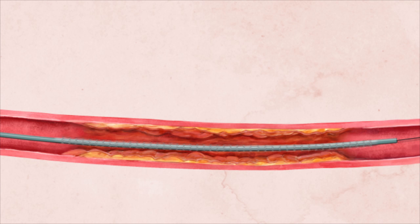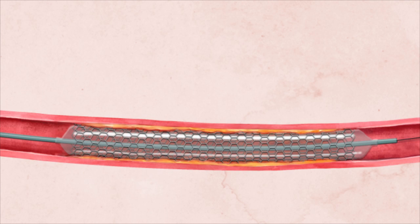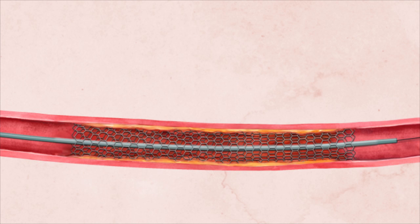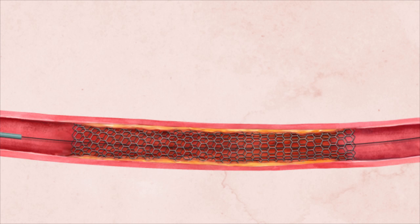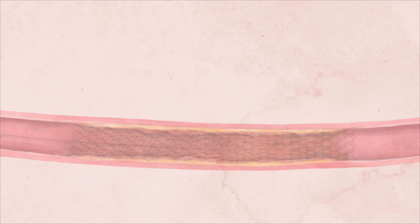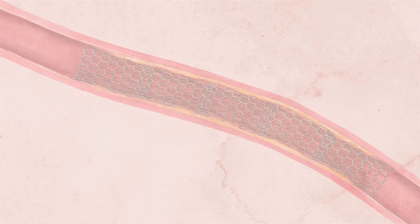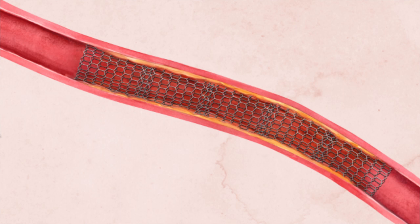The stent is then opened, detaching from the catheter and allowing the catheter to be removed, leaving behind the open stent within the artery. The stent will help prevent the blockage from reoccurring. For longer artery blockages, several stents may be required.